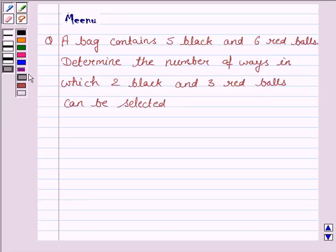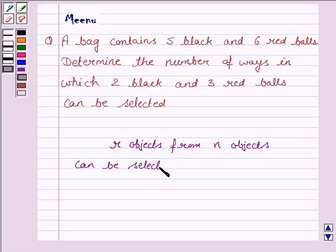To solve this question, we should know the theory of combination which says, R objects from N objects can be selected in NCR ways.